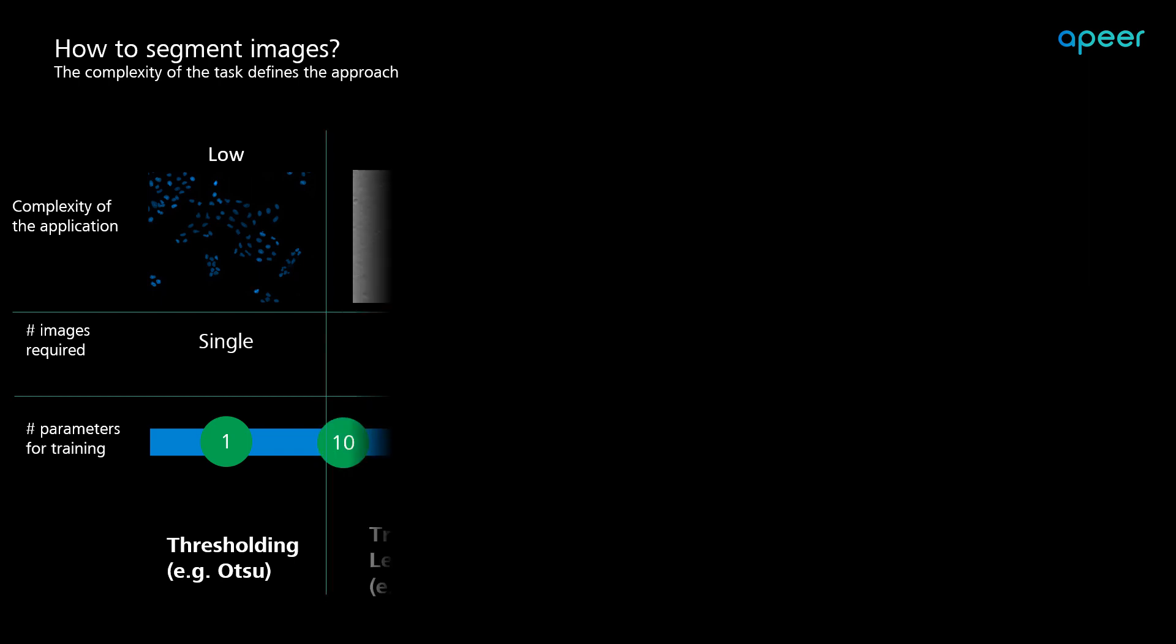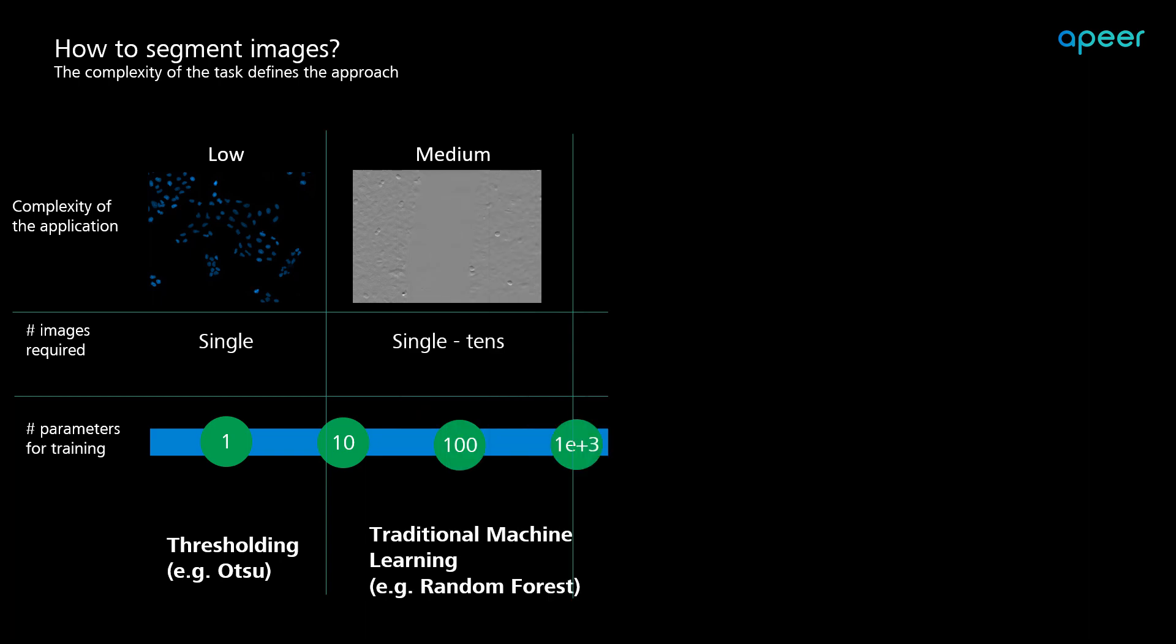As the complexity increases, you may find machine learning-based approaches to be more efficient. In this example, the central smooth region and the textured regions have very similar pixel values. This makes it very difficult for histogram-based thresholding to separate these two regions efficiently. Extracting features that represent texture and applying a traditional machine learning algorithm such as random forest or support vector machines can definitely separate these two regions.